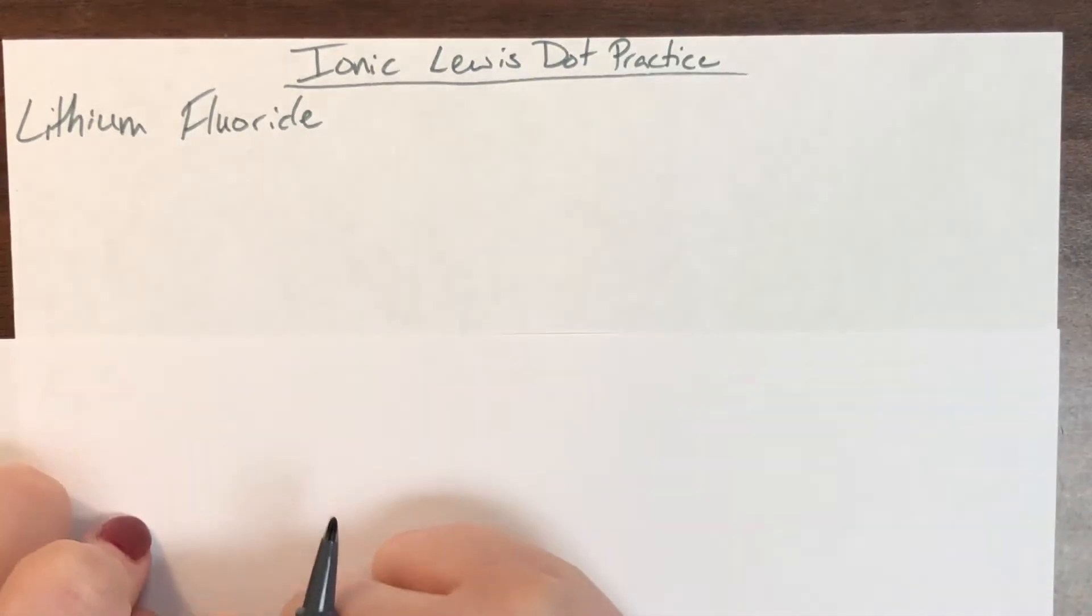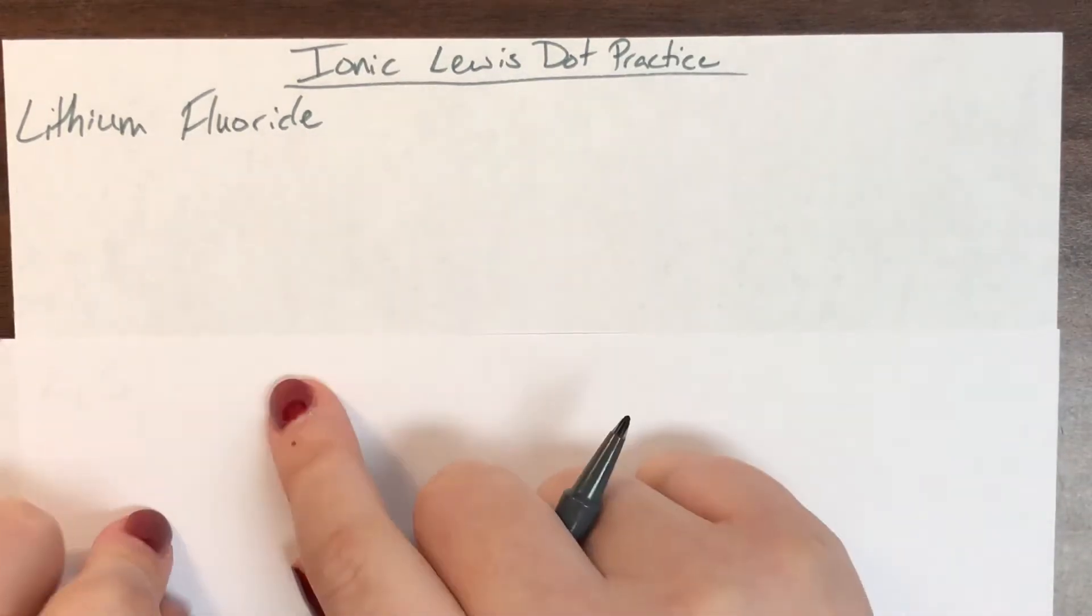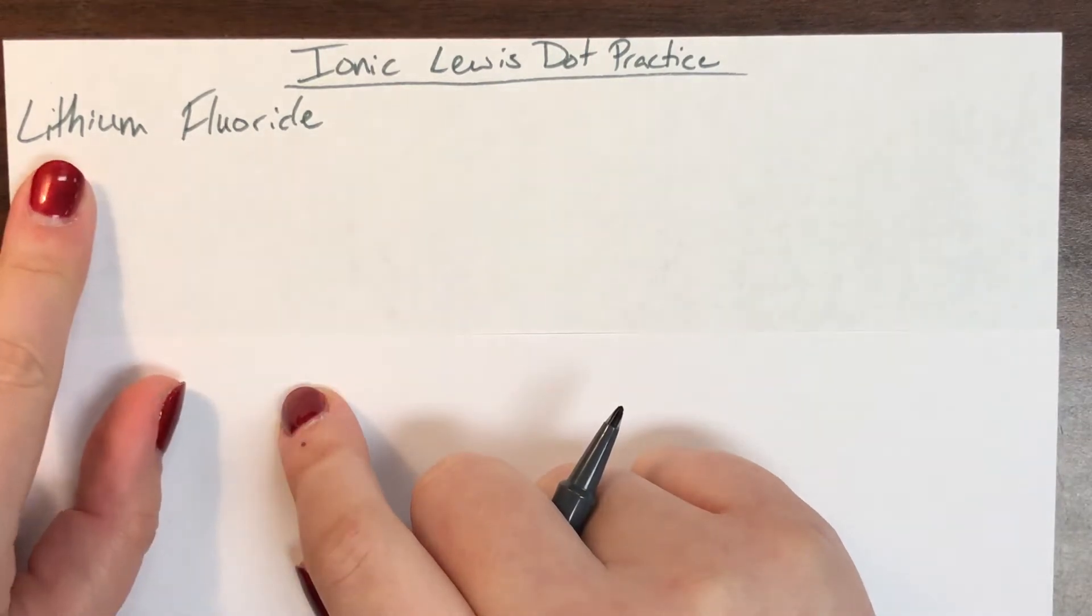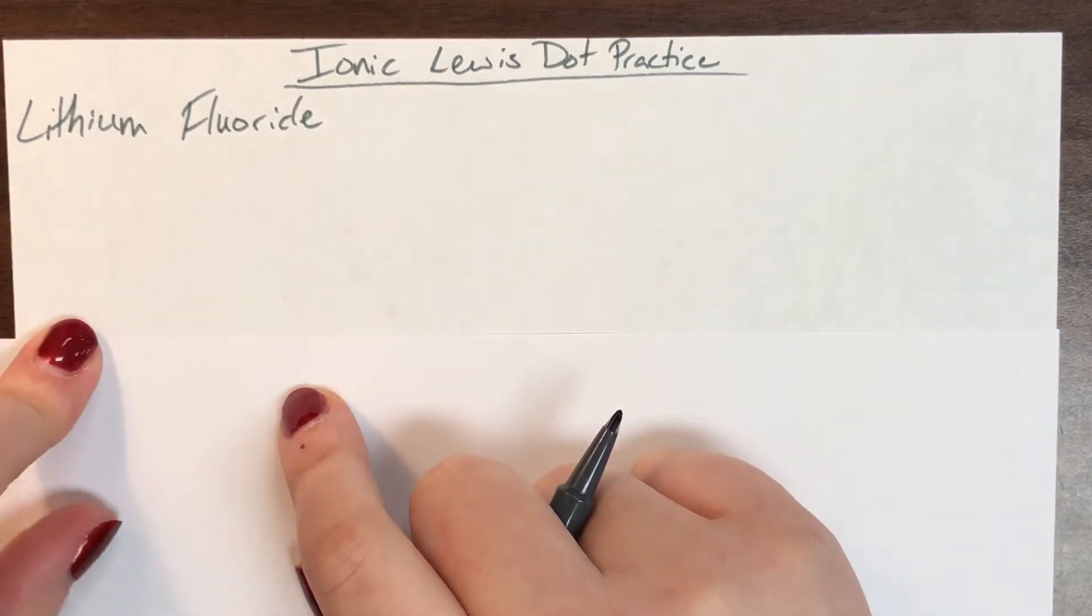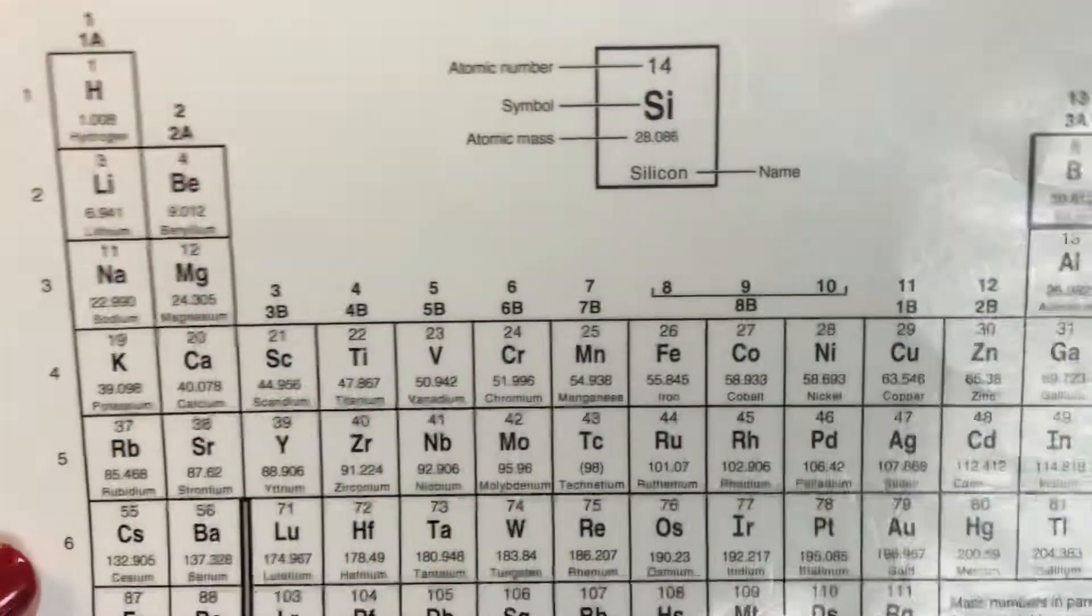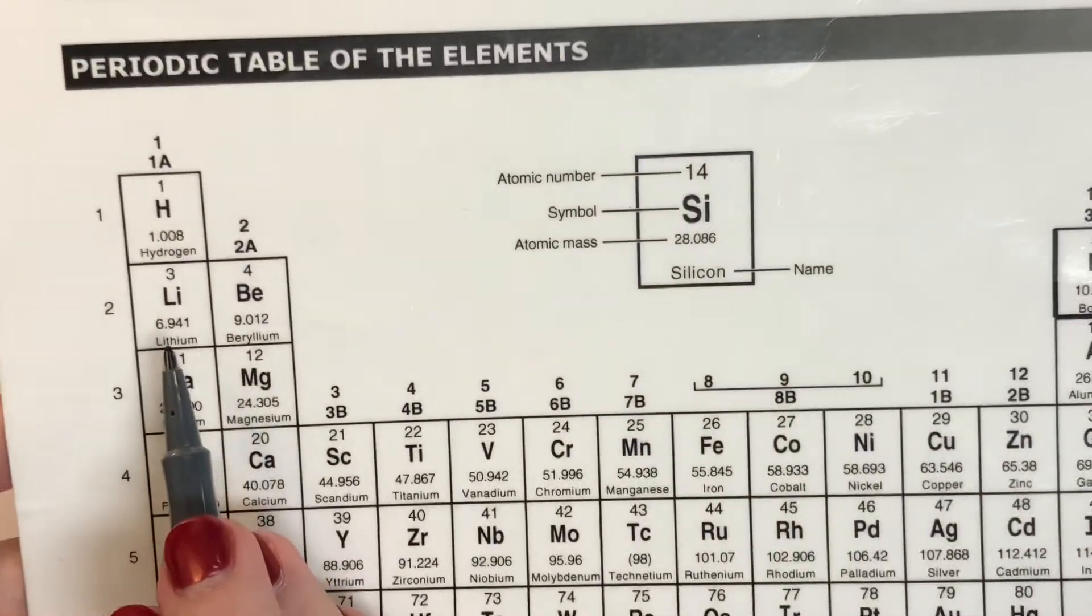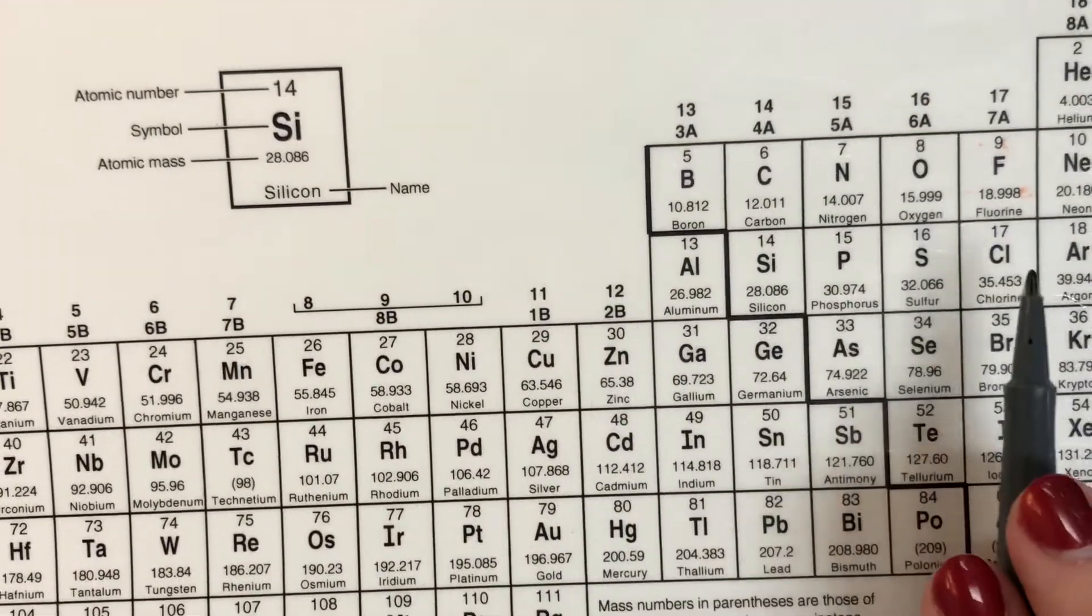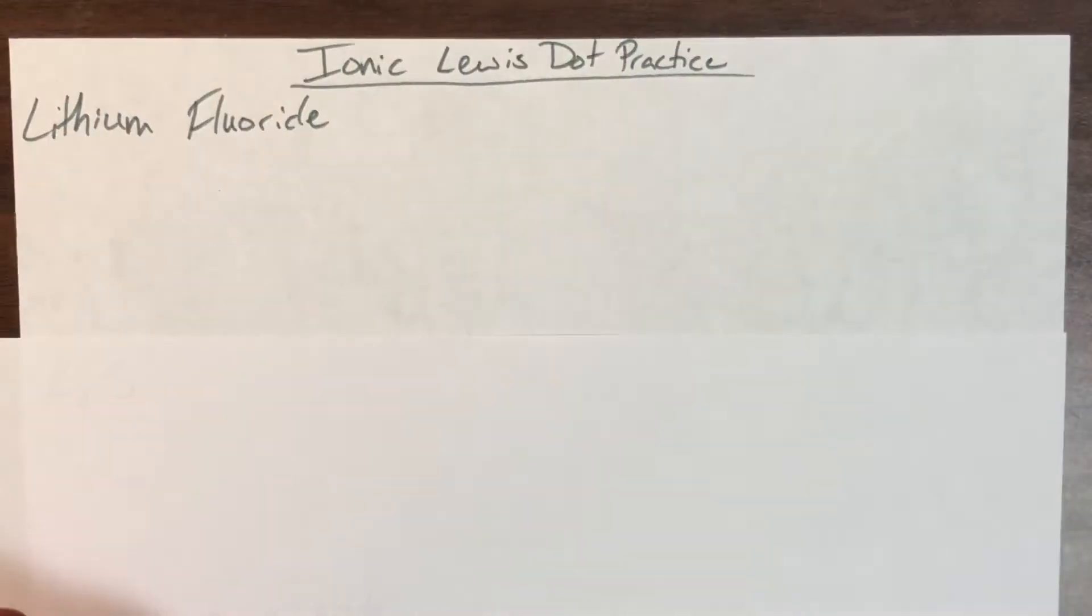Today we'll be covering ionic Lewis dot practice. So first compound we have here is lithium fluoride and the first thing that I need to do is I need to figure out what the symbols are for these elements. So I have lithium who is going to be Li and I have fluoride who is secretly fluorine who is going to be F.